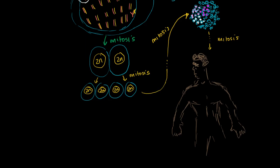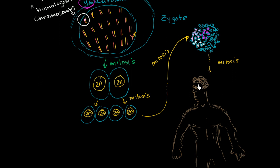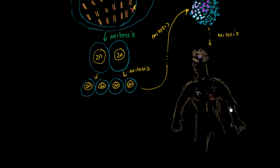It'll eventually differentiate into a human being. The cells in pink eventually differentiate into the cells in the brain; these cells eventually differentiate into the cells of the lungs; and these cells differentiate into the cells of the heart. Now, most of the cells I've depicted here — products of mitosis — are your body cells, or somatic cells: your heart, lung, brain cells. These are somatic cells.